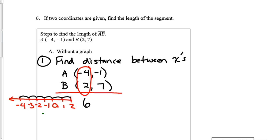So step 2 is find the distance between the y's. We're going to do the exact same thing. I look at the y's, and my y's are -1 and 7. How far away is -1 from 7? That would be 8 units away.